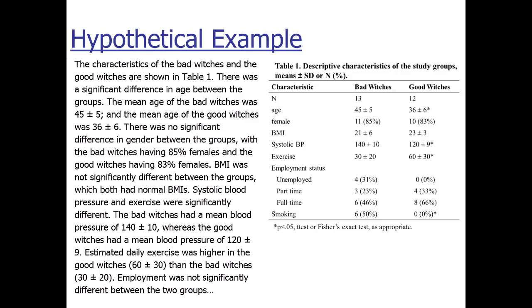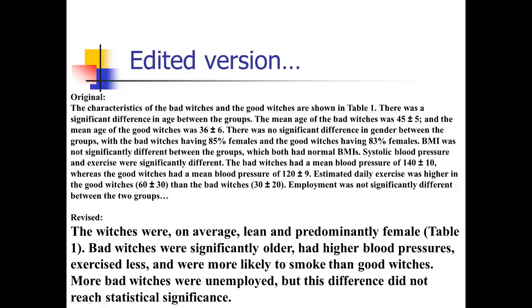Here's the revised version: 'The witches were on average lean and predominantly female (table 1). Bad witches were significantly older, had higher blood pressures, exercised less, and were more likely to smoke than good witches.' I point out all the differences without giving exact numbers — we just want to know how they differ. I don't need to say the groups didn't differ on gender because the reader can see that in the table, and it's implied.